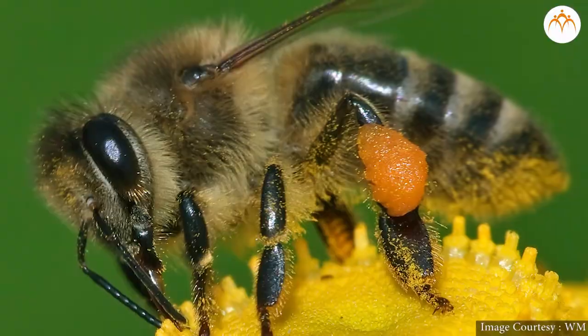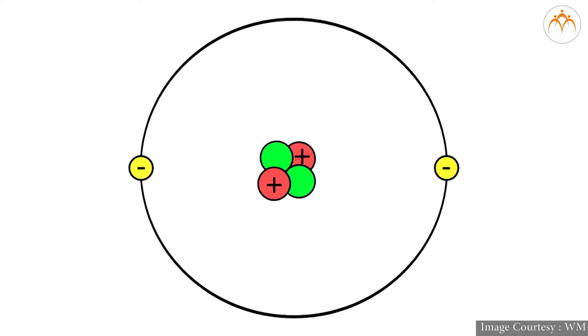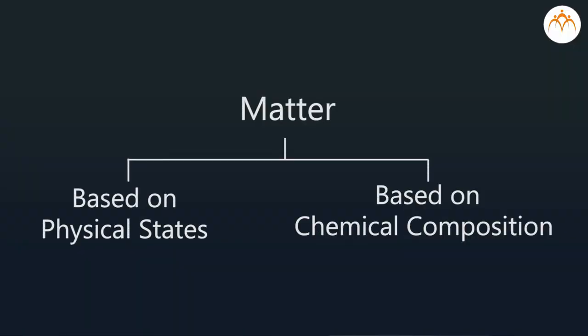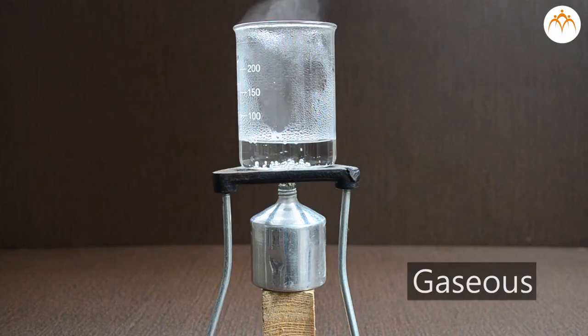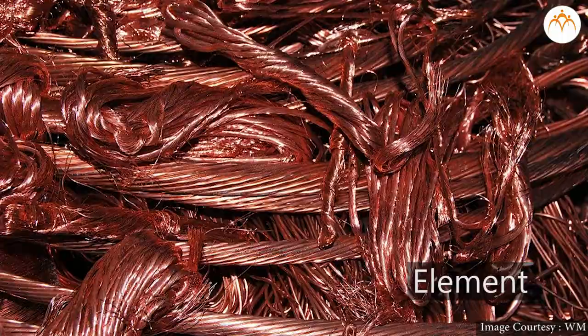Students, let us recall some of the concepts we learnt in previous standards and this year in previous chapters about matter. We know that all the objects that we see around us, and also those which cannot be seen, are made of some or the other matter. Mass and volume are two important properties of matter. Matter is classified using two criteria: physical states of matter — that is solid, liquid and gaseous — and chemical composition of matter — that is element, compound and mixture. So today we will discuss how these types are further classified.